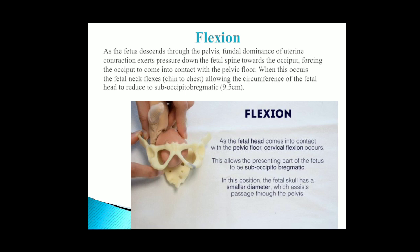Flexion: as the fetal head comes into contact with the pelvic floor, cervical flexion occurs. This allows the presenting part of the fetus to be sub-occipito-bregmatic. In this position, the fetal skull has a smaller diameter which eases its passage through the pelvis.